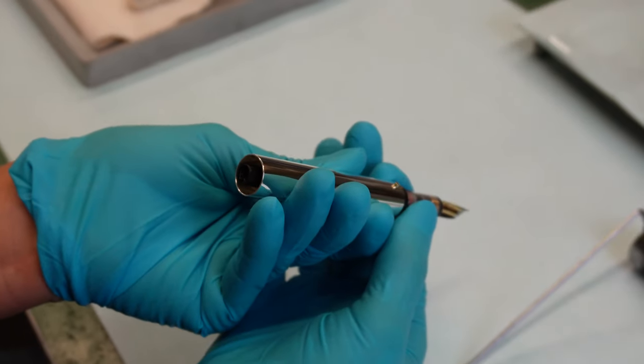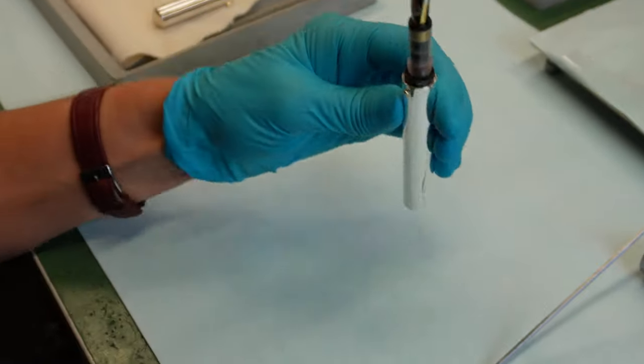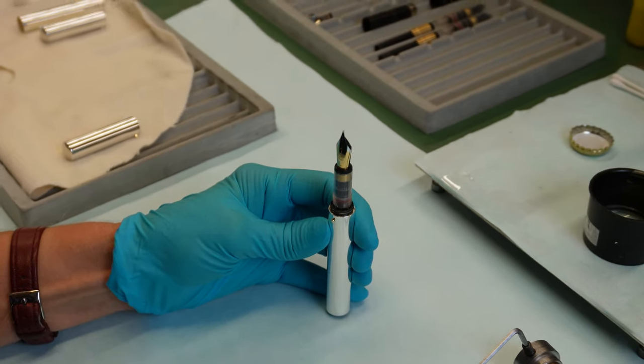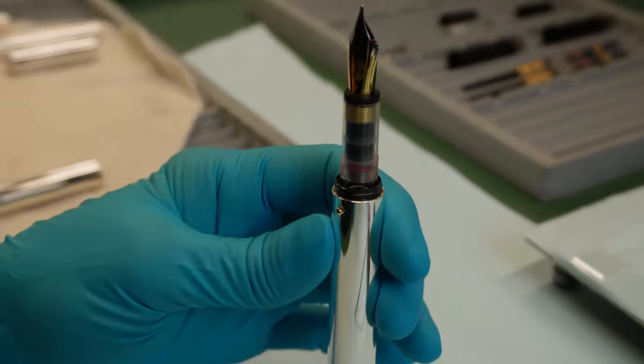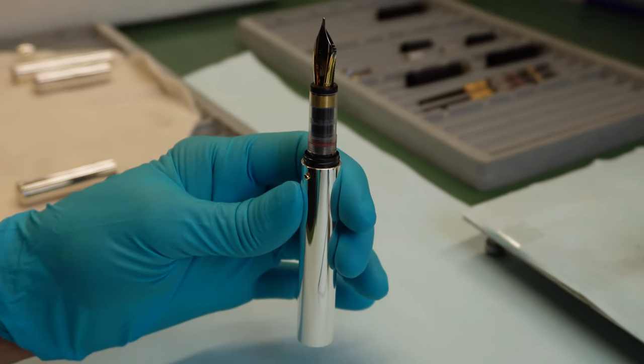And it's being very precisely aligned to the nib. And then after that they put a line of glue, which we're not going to do right now, so that we can actually make sure that the body fits perfectly to the aluminum body which also protects the sterling silver body.